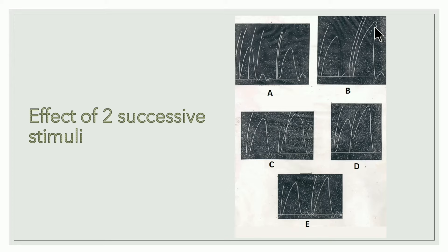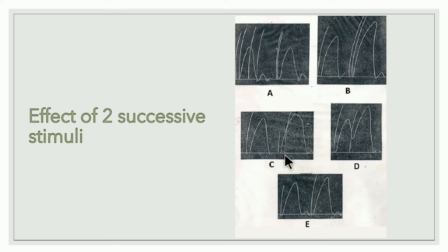Graph C: the second stimulus is applied during the contraction period of the first stimulus. The height is increased compared to single stimulation. The increase in height is because of summation of contractions. So C is when the second stimulus is applied in the contraction period, and the increase is due to summation of contractions.